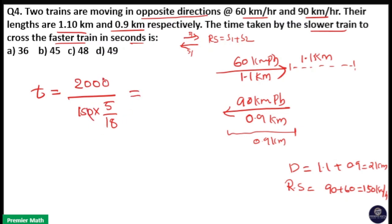Canceling zeros and calculating: 3 times 6 is 18, 3 times 5 is 15, 5 times 5 is 25, 25 times 8 is 200. This 6 comes to the numerator, 8 times 6 is 48 seconds. So option C is your answer.